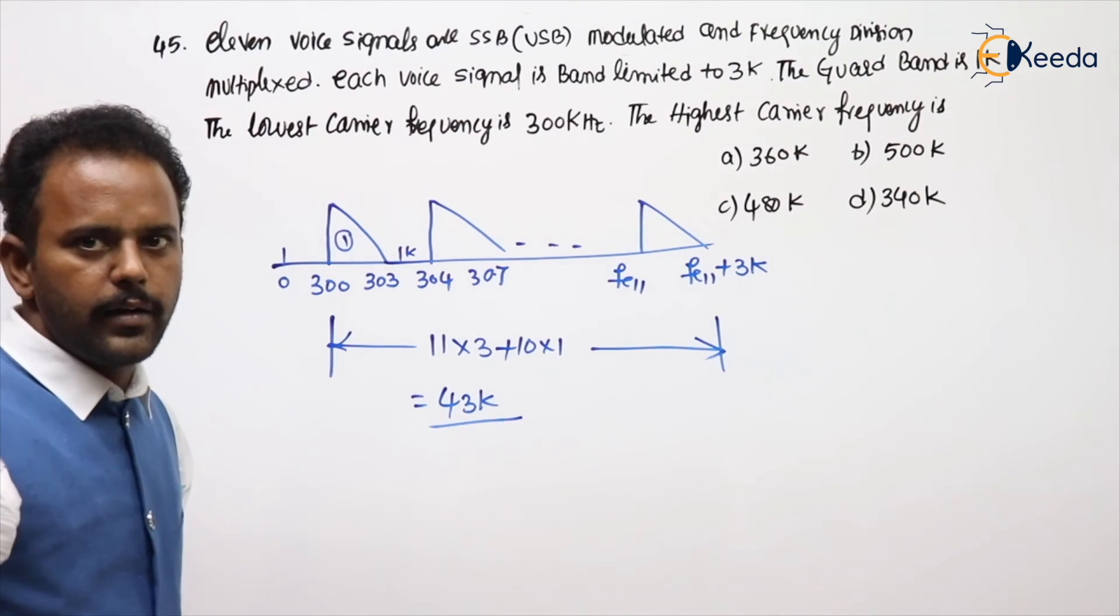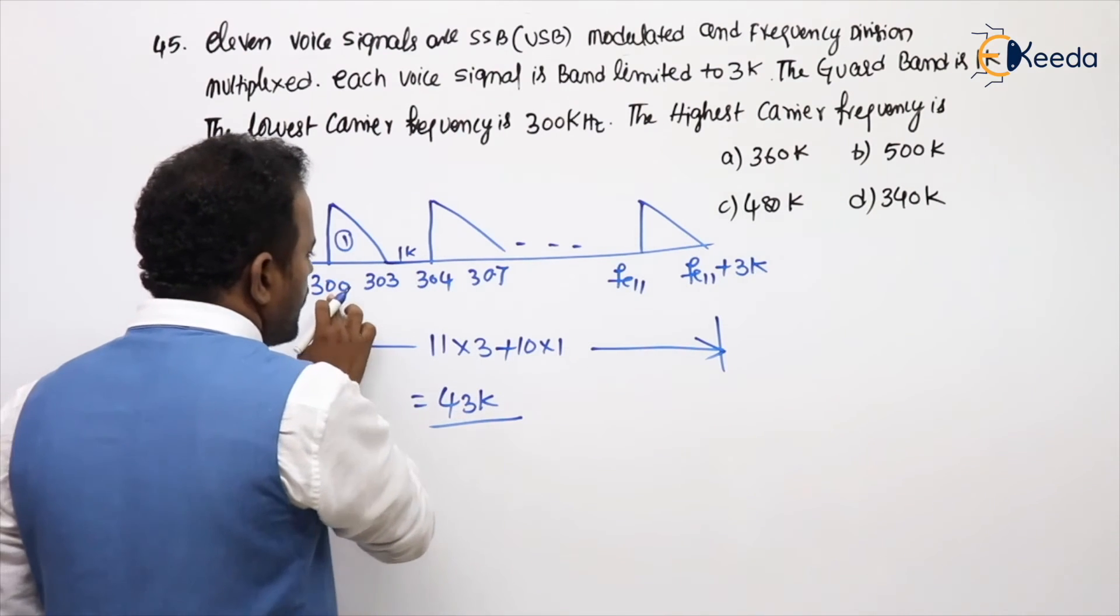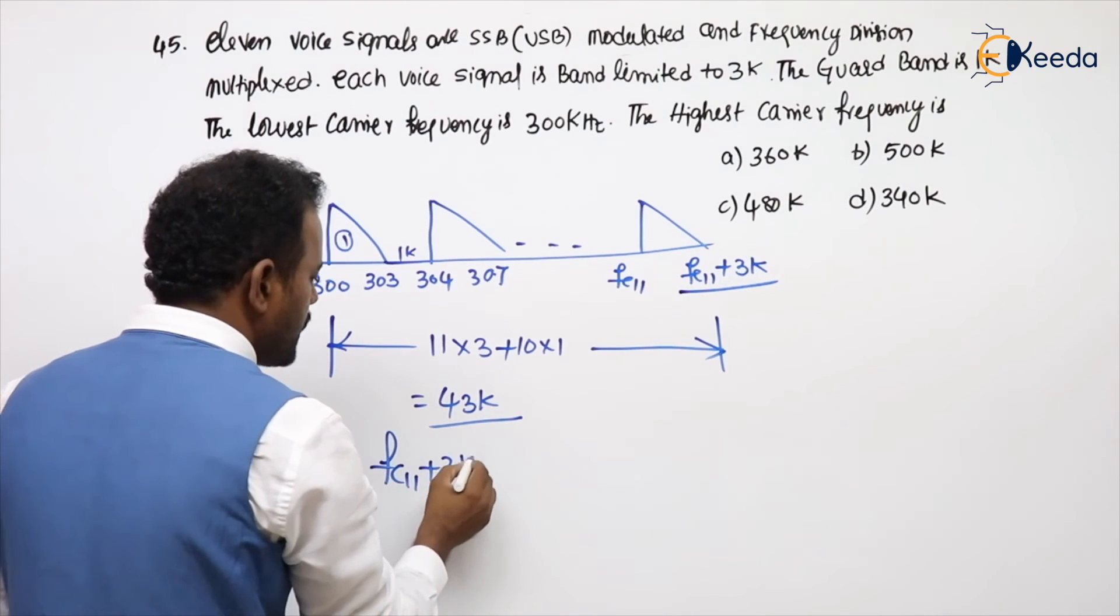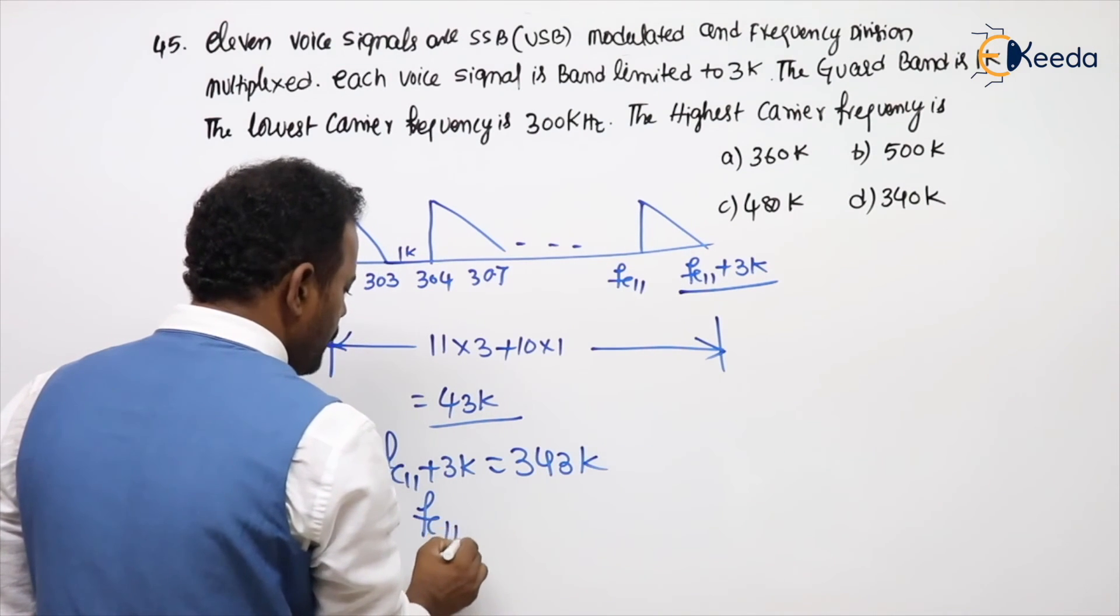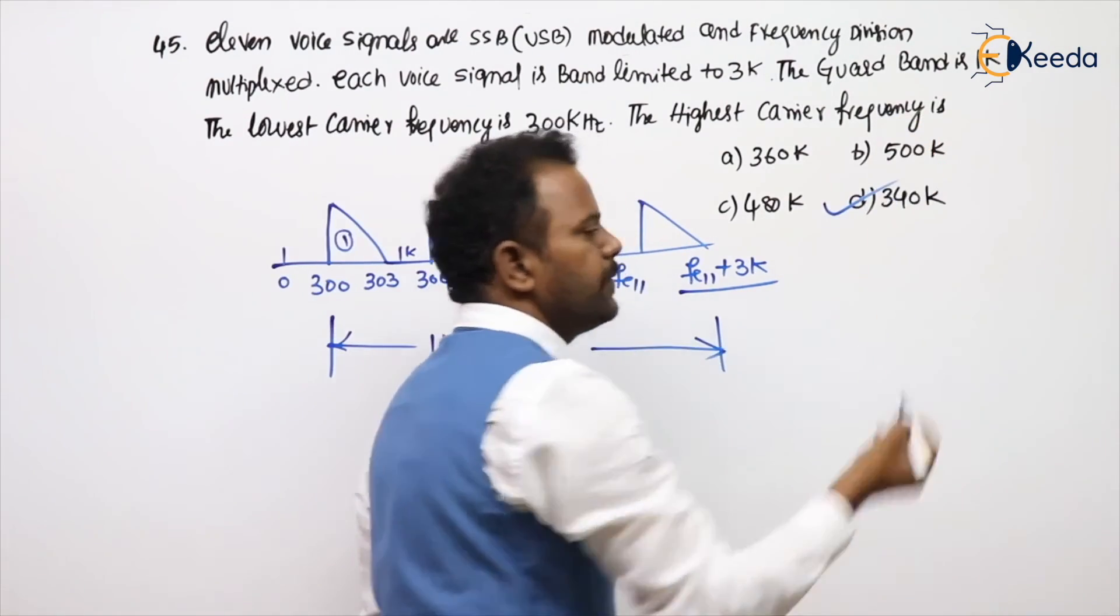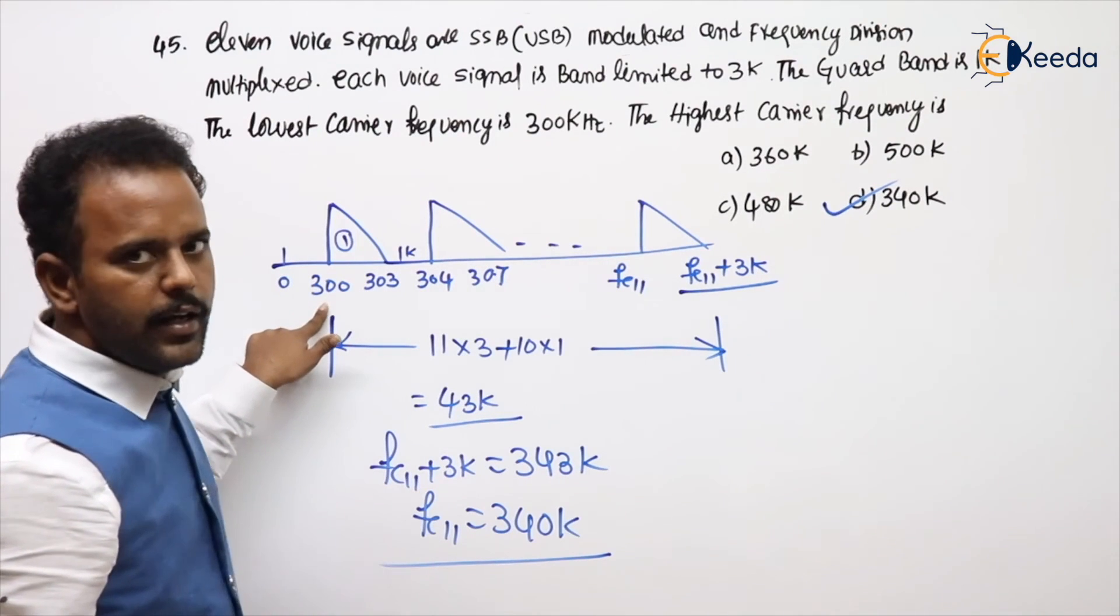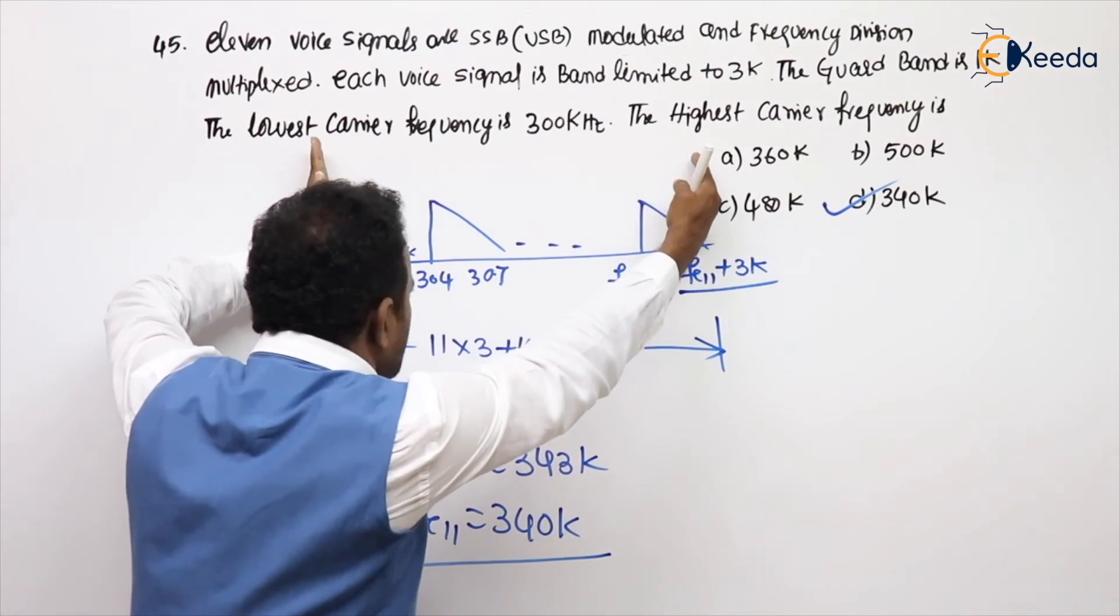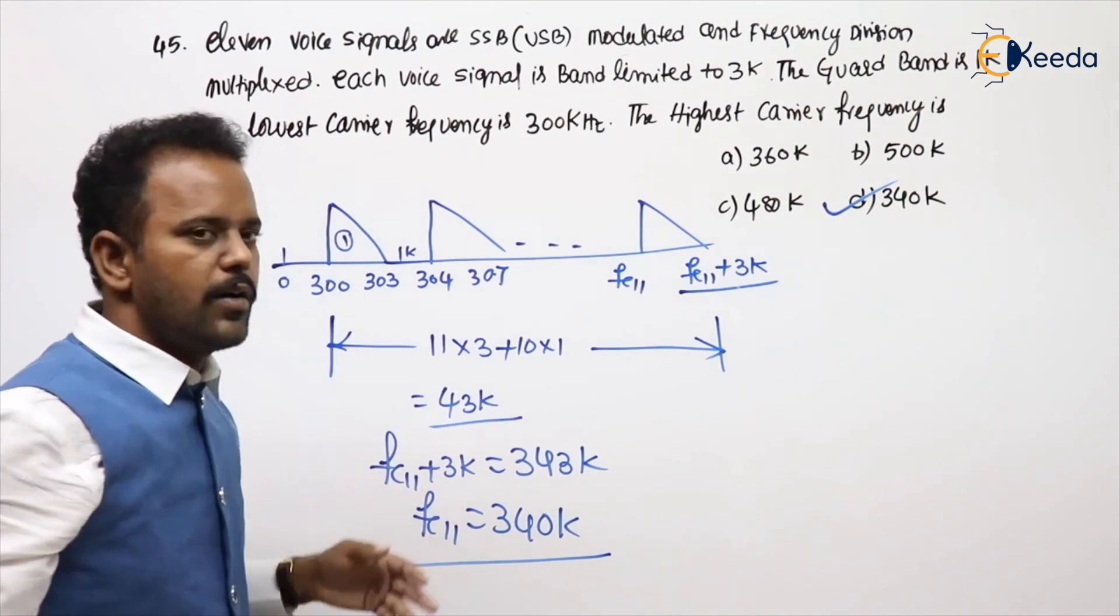Got my point or not? Now follow, this is 300 plus 43, so last to this value is 343. So FC11 plus 3K will be 343K. So FC11 value will be 340K. Now see the options, option D. So 11 signals is multiplexing, starting value given carrier frequency, last carrier frequency we need to calculate. So what I done, I calculate the total value, and this will be obviously FC11 plus 3K. I substitute it, I got 340K.